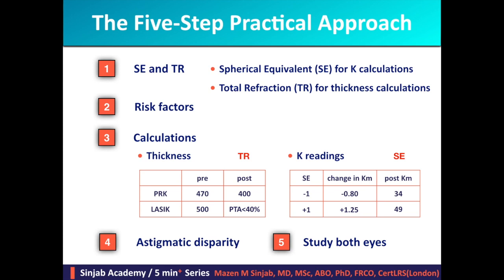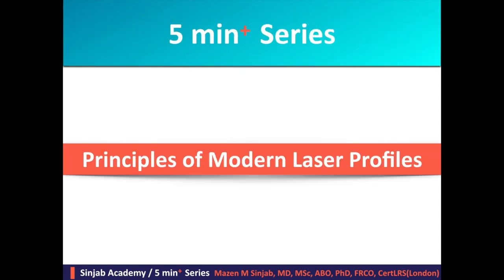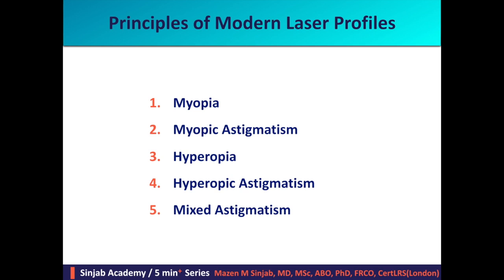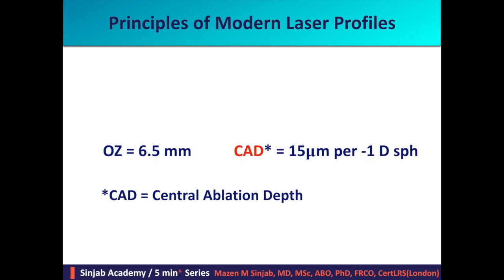But before going into details we have to study the principles of modern laser profiles in myopia treatment, myopic astigmatism treatment, hyperopia treatment, hyperopic astigmatism treatment, and mixed astigmatism treatment. In order to simplify the matter I'm going to consider the optical zone 6.5 millimeters as a default, in order to calculate the central ablation depth to be 15 microns per minus one diopter of sphere.